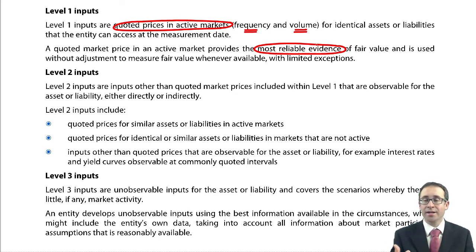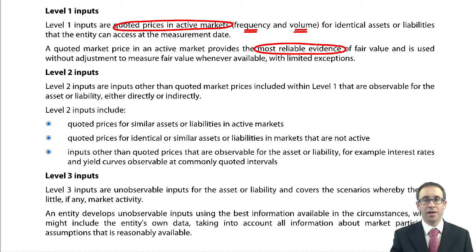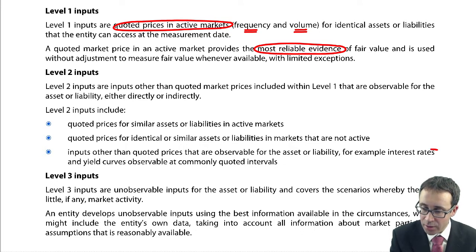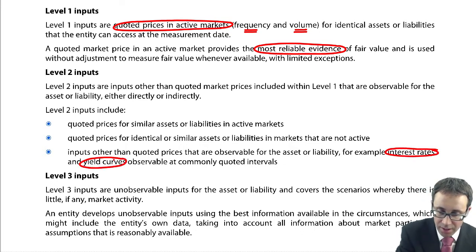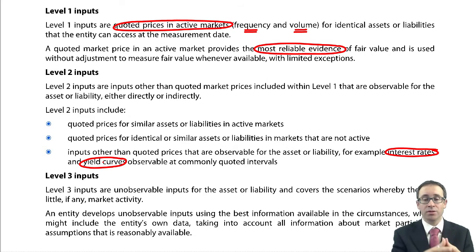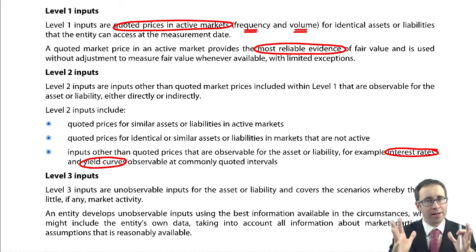Level 2 also talks about markets that are not active. So that's referring back to the share that we own — maybe it's not an active market, but something similar is otherwise traded and we can use that similar value. The other Level 2 input is where there is no specific market, but we can use directly quoted interest rates or yield curves. Observable inputs — that's the key bit about Level 1 and Level 2: they have to be observable. You can use those interest rates and yield curves to value your bonds within your financial assets.